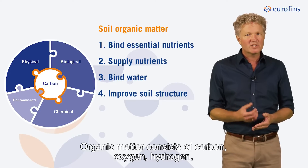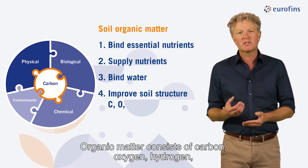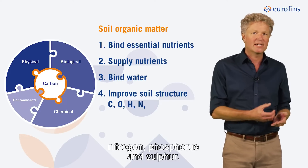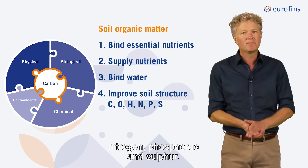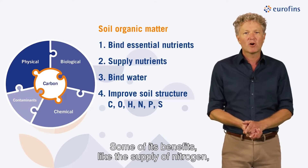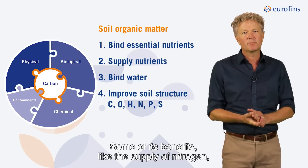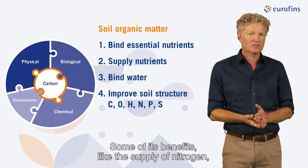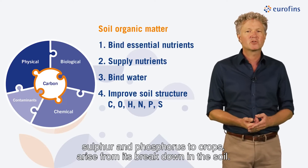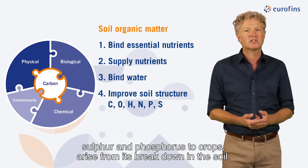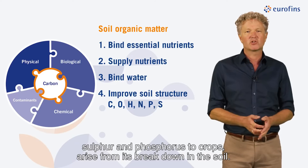Organic matter consists of carbon, oxygen, hydrogen, nitrogen, phosphorus and sulfur. Some of its benefits, like the supply of nitrogen, sulfur and a little bit of phosphorus to crops, arise from its breakdown in the soil.